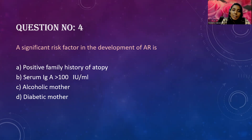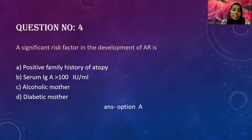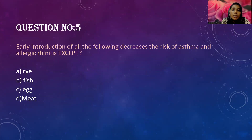Question four: a significant risk factor in the development of allergic rhinitis is — Option A: positive family history of atopy; Option B: serum IgE more than 100 international units per ml; Option C: alcoholic mother; Option D: diabetic mother. The correct answer is Option A — positive family history of atopy. Regarding Option B, serum IgE is the marker that is raised in atopy or allergic rhinitis. Alcoholic or diabetic mother are not risk factors; however, a mother who smokes — both during pregnancy and in the immediate postnatal period — is a risk factor for development of allergic rhinitis.